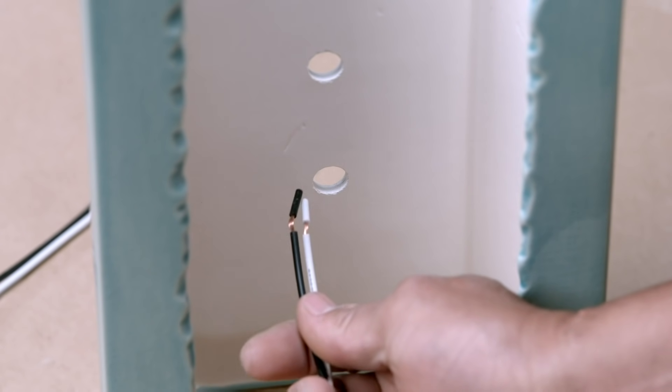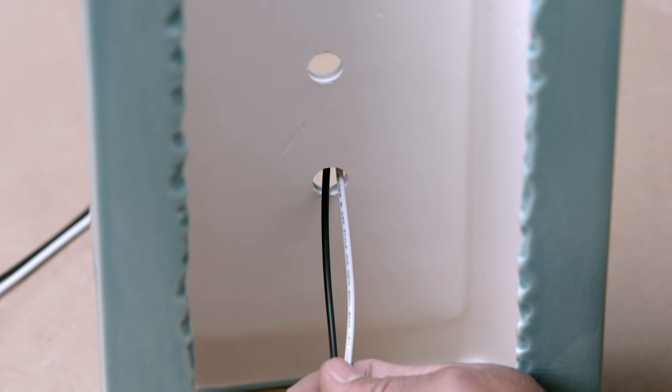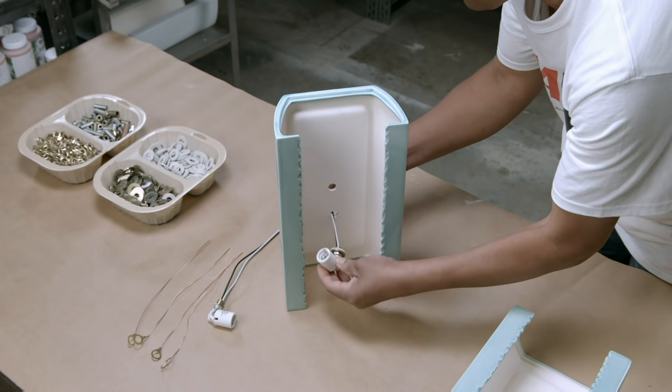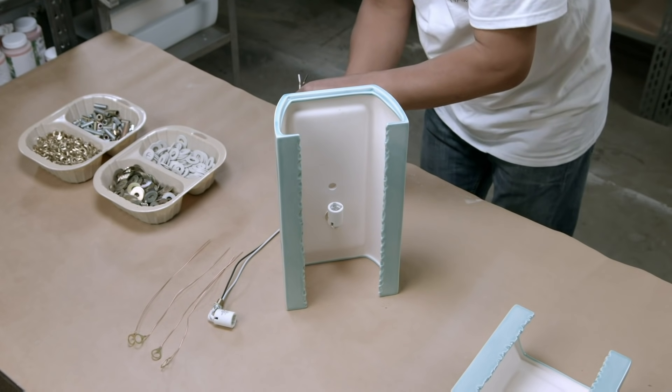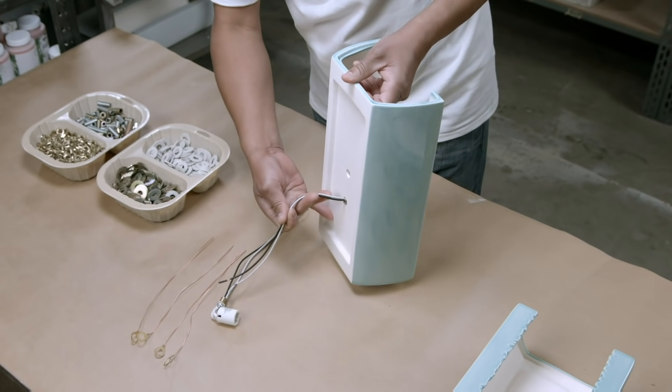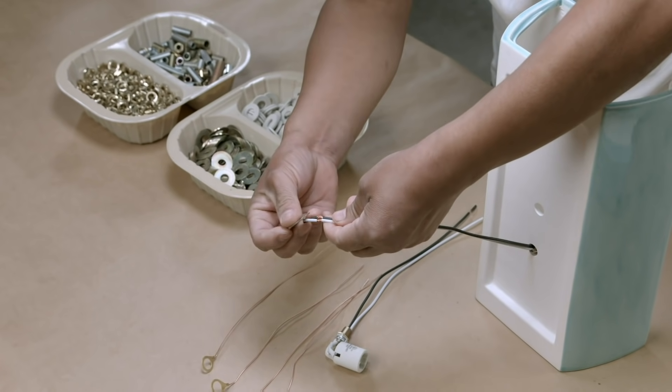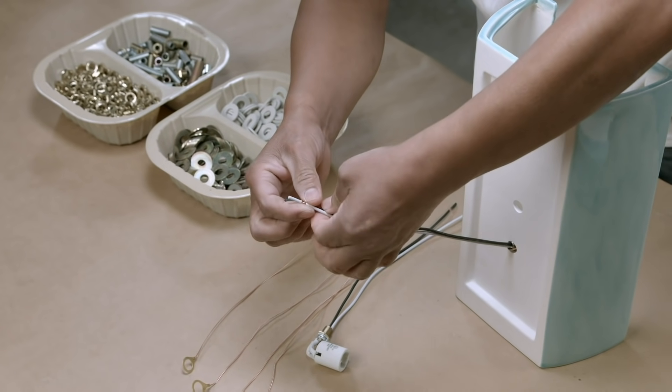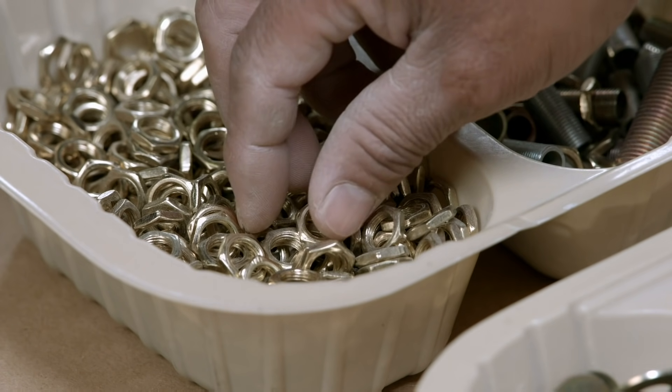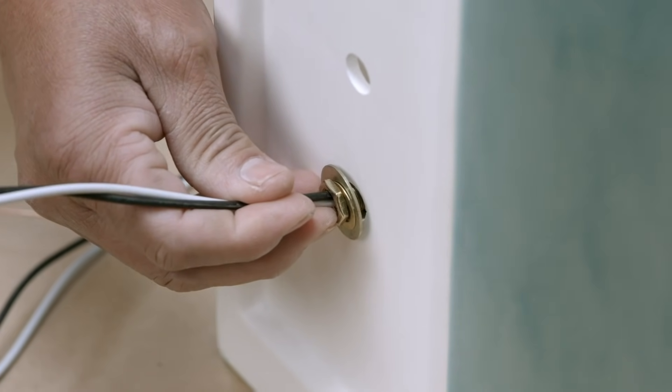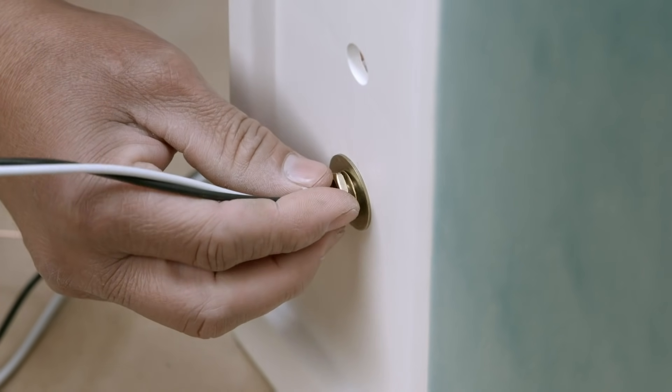Next, the light socket is fitted through one of the holes in the casing, with the wires being pulled through the back. A brass washer is then threaded over the wires, followed by a second washer that's connected to an earth wire. The washers and light socket fitting are secured into position with a nut.